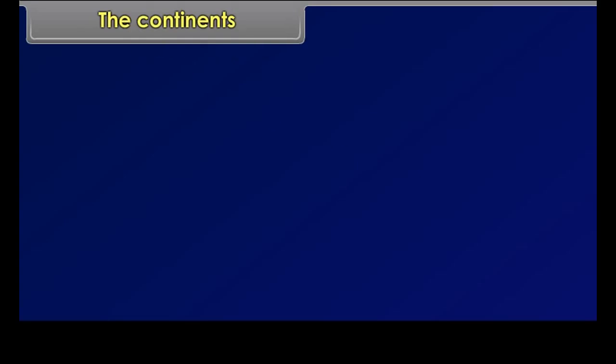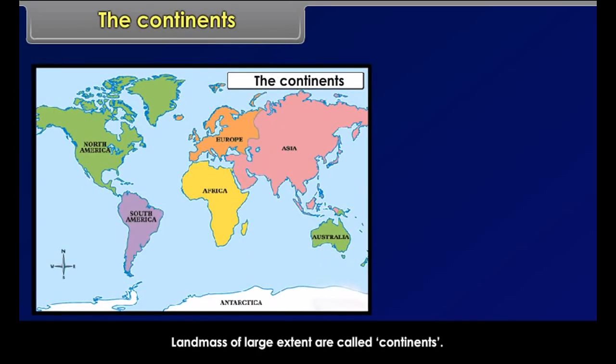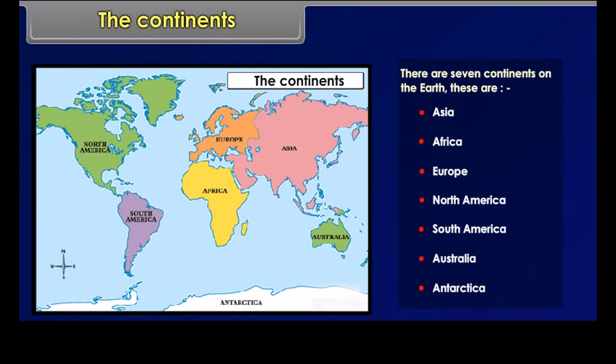The continents. Land masses of large extent are called continents. There are seven continents on the earth. These are Asia, Africa, Europe, North America, South America, Australia, and Antarctica.